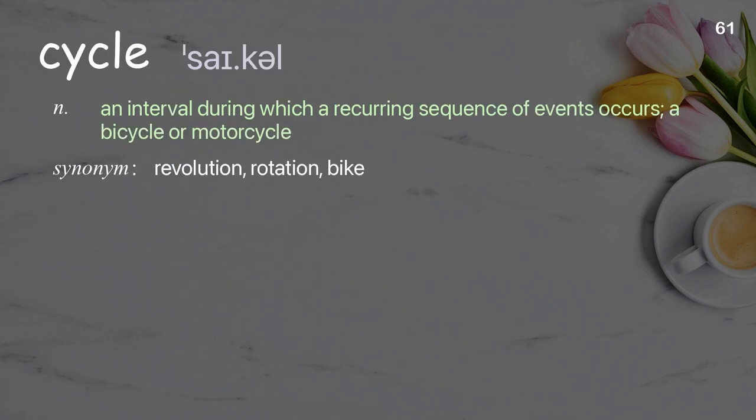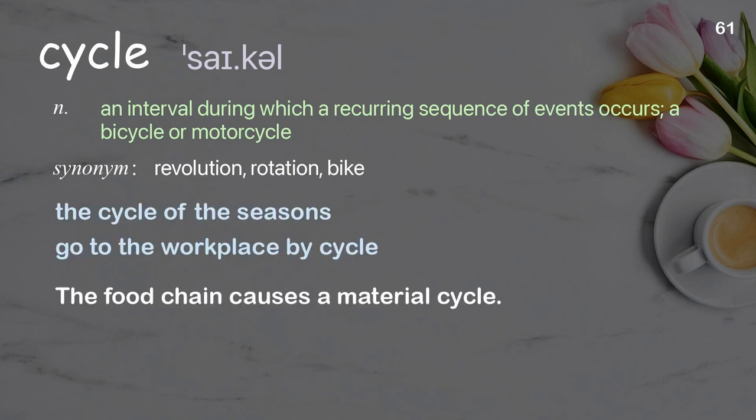Cycle: an interval during which a recurring sequence of events occurs; a bicycle or motorcycle. Examples: the cycle of the seasons, go to the workplace by cycle. The food chain causes a material cycle.